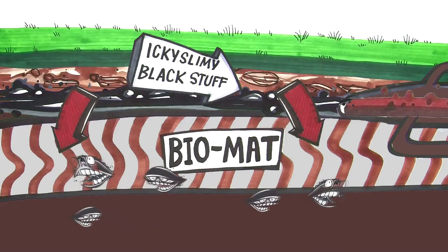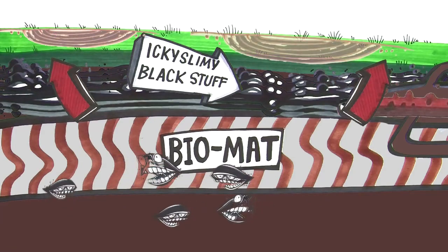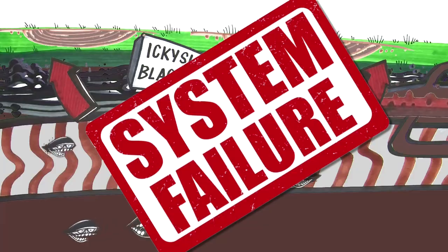Problem is, after a while, there's too much black, slimy stuff. The biomat grows thicker. Too thick, it clogs, and your system fails.